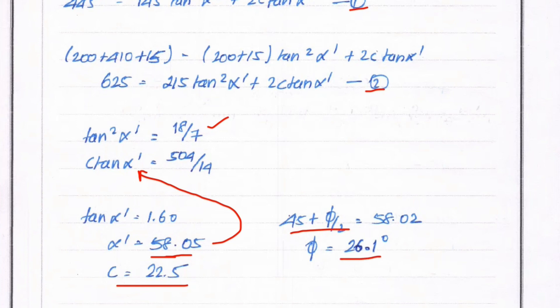So the shear strength parameters are: cohesion c equals 22.5 kPa and angle of internal friction phi equals 26.1 degrees. This is the method to solve the triaxial test problem. We will see more in the next video. Thank you.